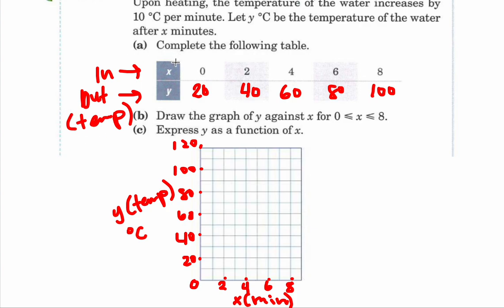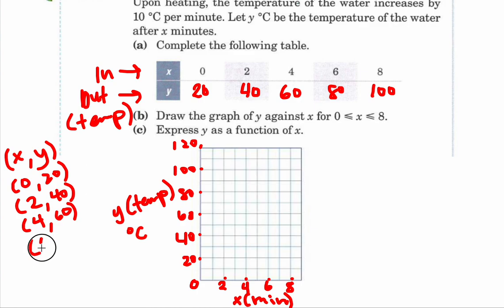I'm going to write them on the side here. X always goes first. By writing ordered pairs, it'll make it easier for me to graph later. So my first ordered pair is 0 and 20. Second is 2 and 40. Third ordered pair is 4 and 60. Then 6 and 80. And 8 and 100.